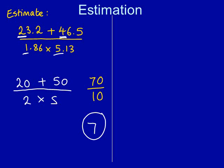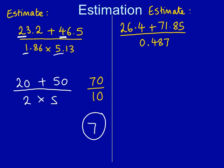So we've now got 3 marks for this question. We're going to have a go at another one now. Here's our next question, slightly harder this time. 26.4 add 71.85 all over 0.487. So we need to estimate the answer, which means we need to round each number to one significant figure.